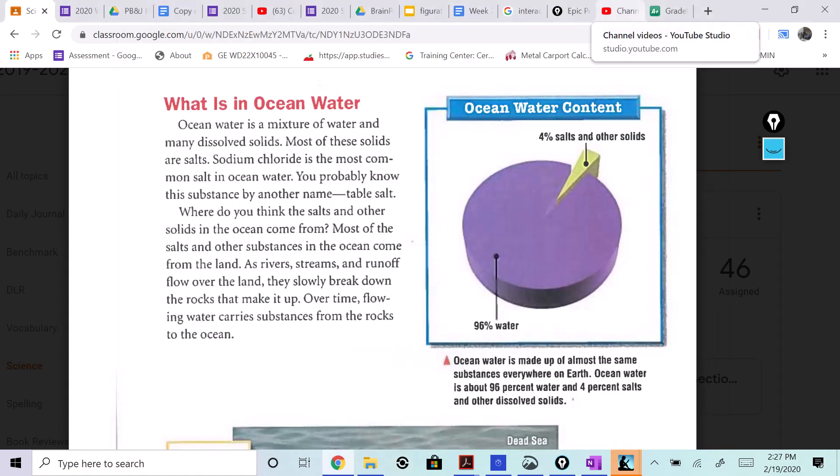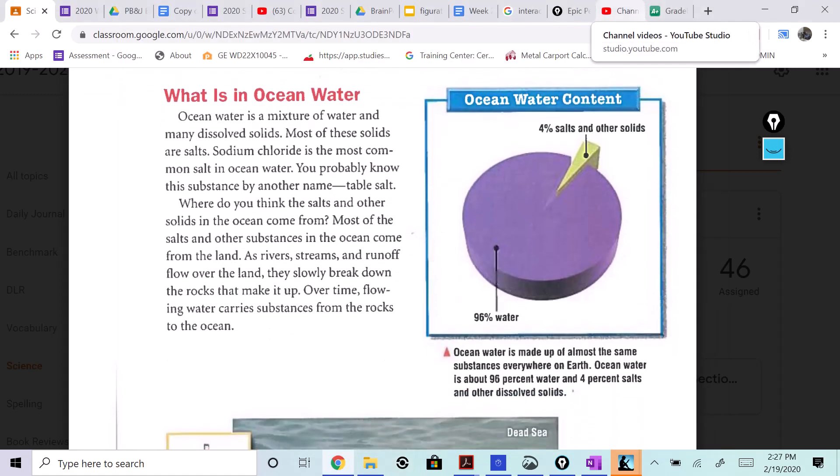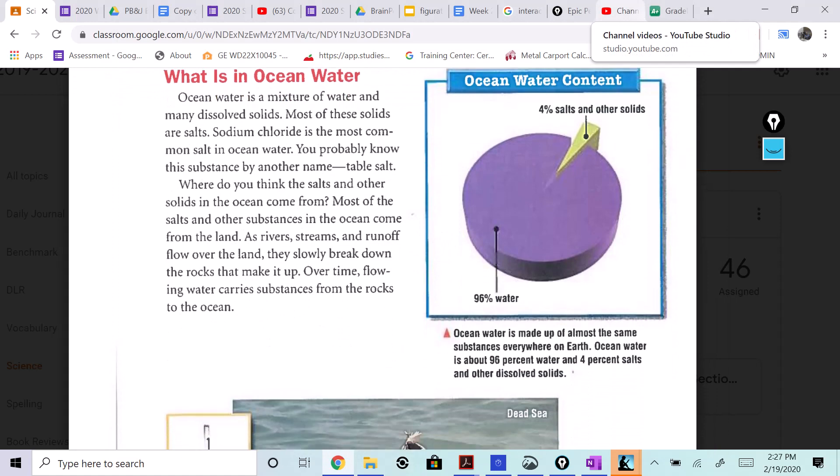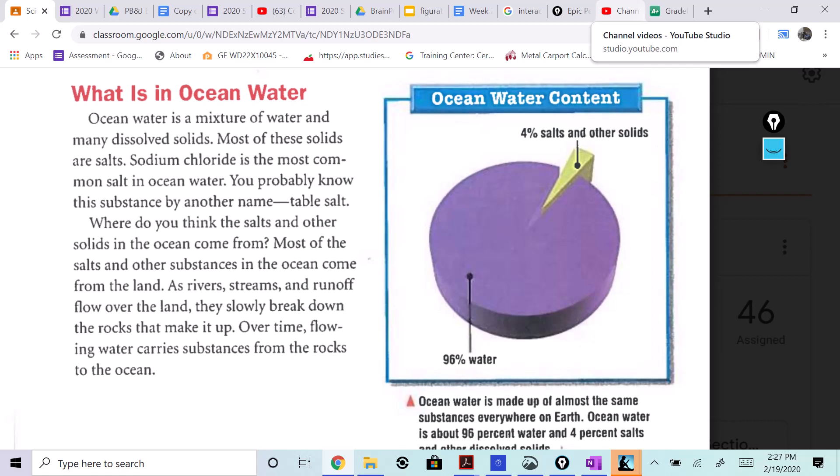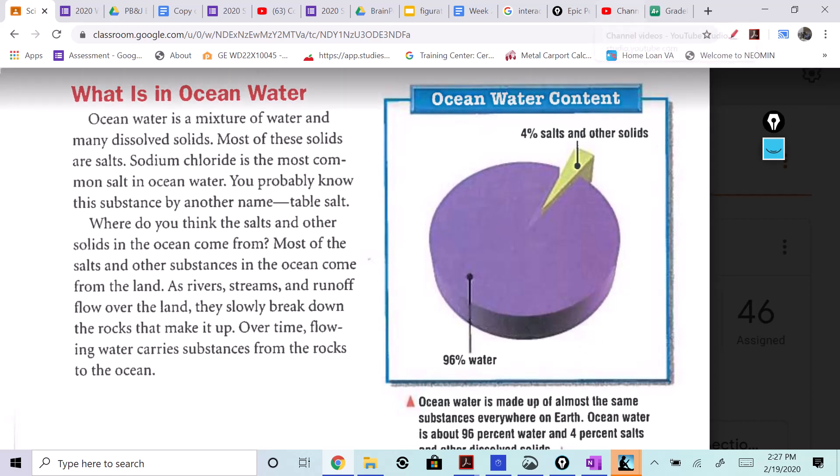All right, we're skipping right down. HD 36 - what is in ocean water? Let's take a look at this chart, or this pie chart that says 4% salts and other solids, 96% water.